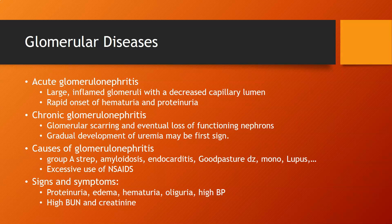Chronic glomerular nephritis involves glomerular scarring and eventual loss of functioning nephrons, because scar tissue doesn't operate the way normal tissue does. The evidence is a gradual development of uremia — that's the accumulation of urea in the blood — so you would have an elevated blood urea nitrogen. Causes of glomerular nephritis include Group A strep (especially for acute), amyloidosis, endocarditis, Epstein-Barr, mononucleosis, lupus, and excessive use of NSAIDs such as ibuprofen and aspirin.